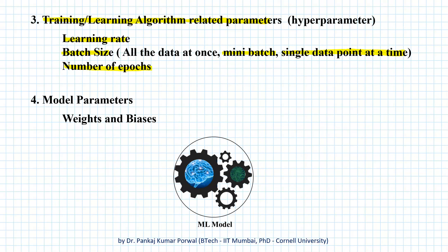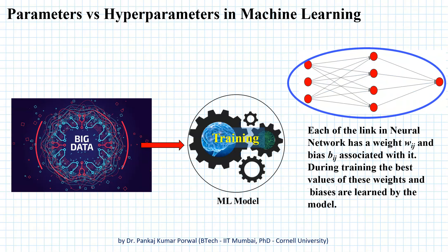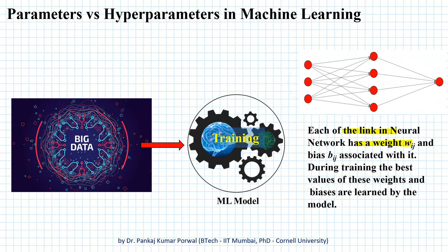Once all these parameters are decided, we come to training. Before the training starts, the model parameters — that is the weights and biases in our neural network — are assigned random values. For example, in this neural network each link has a weight and bias associated with it, and we assign random values to these weights and biases before training starts.